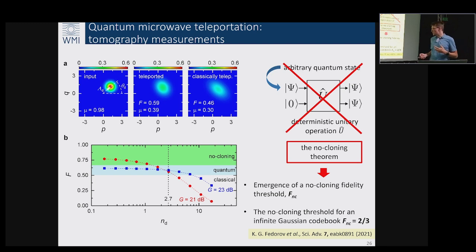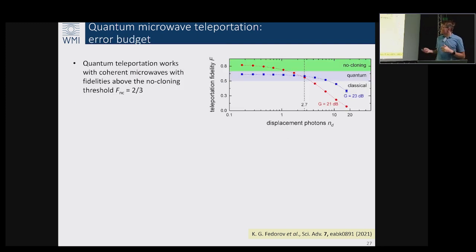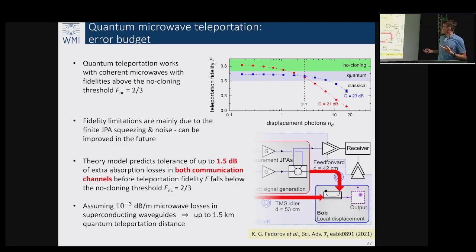We can enter the so-called no-cloning regime where teleportation fixes one of the issues of the quantum state transfer because it becomes unconditionally secure due to the existence of a no-cloning theorem. There are a couple of interesting details hidden here which are connected to this no-cloning threshold because it's strictly correct only for infinite Gaussian code books. When we did the error budget analysis of these results, we fitted nicely and understood where from all these losses and error budgets come.